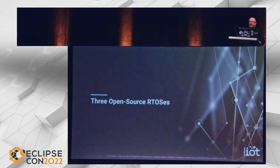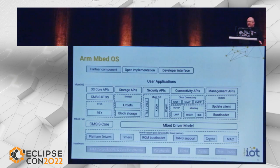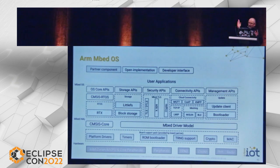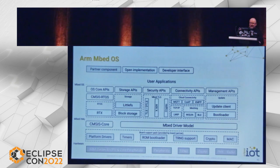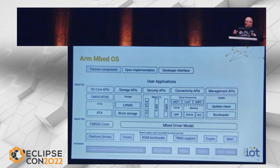Let's have a slightly technical look at three RTOS options. The first is ARM Mbed — it's open source. Parts of the components, including platform drivers and timers at the bottom of the diagram, are delivered through what they call a board support pack, meaning they work with NXP, Nordic, and others to provide drivers and low-level support to leverage the full capabilities of a board. Those board support packs are not always open source, so the core OS is open source but you have to figure out what options exist for your specific hardware.